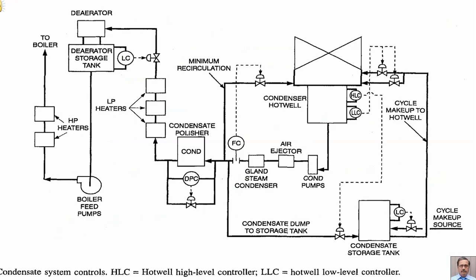Let us spend some time to get familiar with this diagram. This is the boiler feed pump, which is getting water from the deaerator storage tank and pumping it to the boiler. The deaerator tank level is controlled by this control valve on the condensate supply line. This is the condensate pump. This is the condenser hot well. These are the condensate makeup valves. These are the condensate dump valves. This is the condensate storage tank.